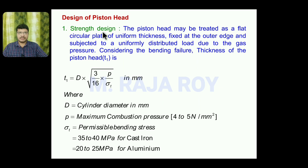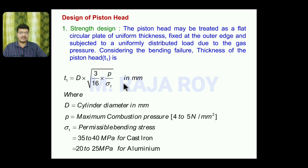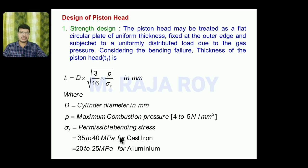In the design of the piston, we start with the design of the piston head — first the strength-based design, then the thermal-based design. The piston head may be treated as a flat circular plate of uniform thickness fixed at the outer edge and subjected to a uniformly distributed load due to gas pressure. Considering bending failure, the thickness of the piston head T1 is given by: T1 = D × √(3P / 16σ_t), where D is the cylinder diameter in mm, P is the maximum combustion pressure (around 4–5 N/mm²), and σ_t is the permissible bending stress — 35 to 40 MPa for cast iron and 20 to 25 MPa for aluminum.